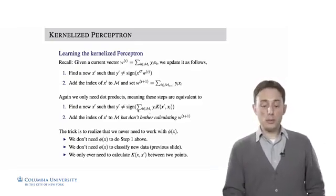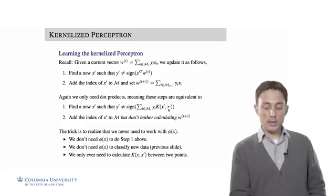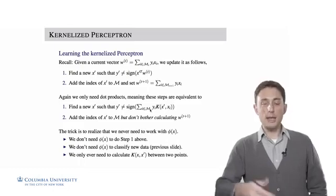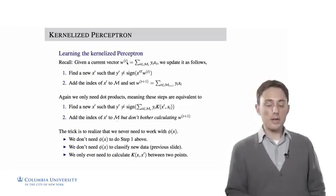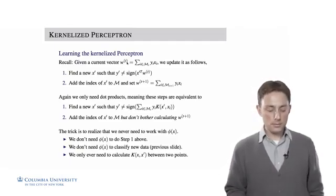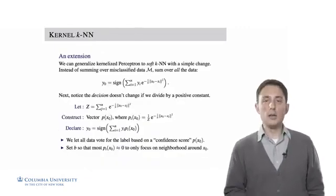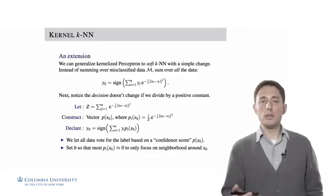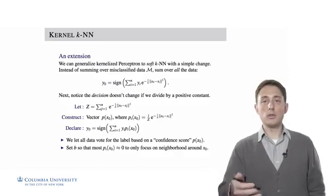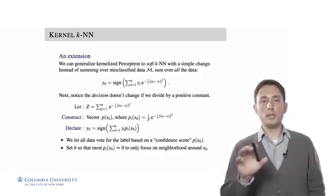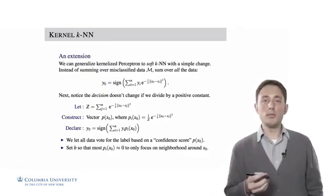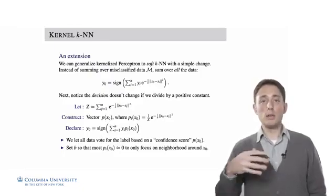To find a misclassified point, we only need to calculate the kernel between the proposed point and the points in our current misclassified set. When we augment M_t to get M_{t+1}, we take the index of the misclassified point but never bother computing the new classifier explicitly, because we only ever need dot products. So we can do a kernelized perceptron by defining only the kernel function between any two points in our dataset.